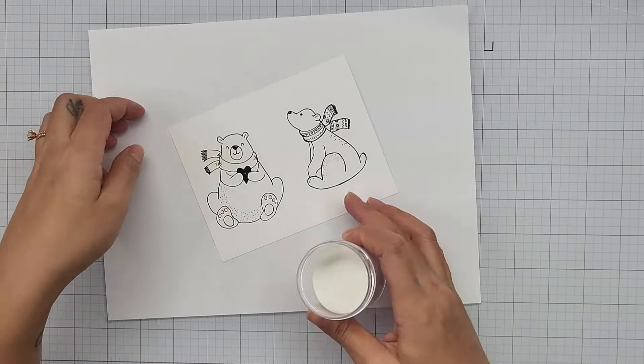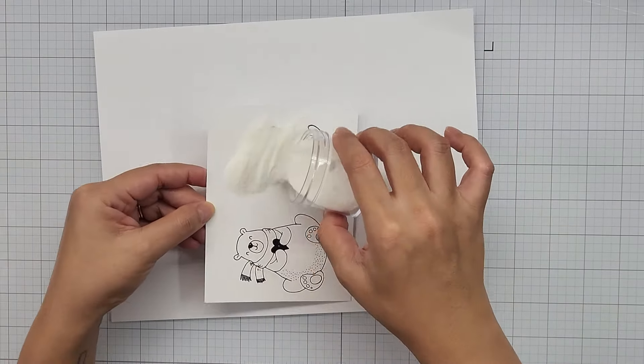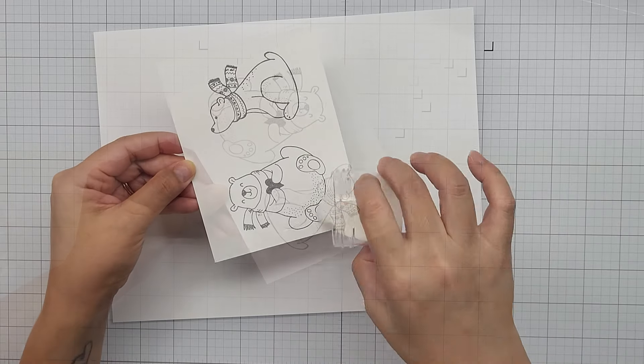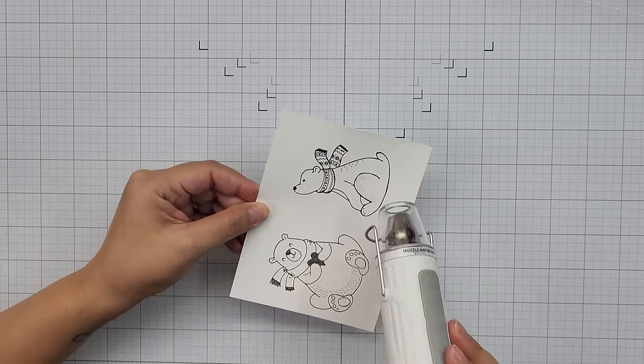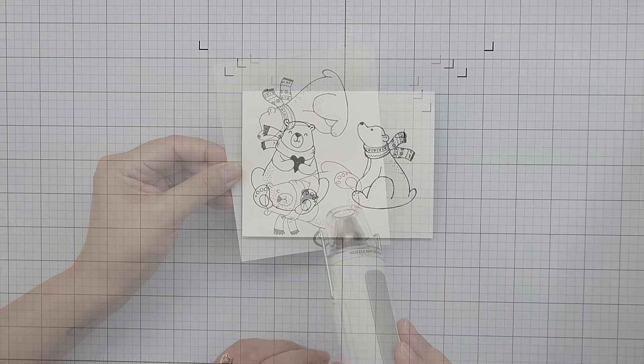Now I poured clear embossing powder over the stamped bears. I heat set the embossing powder with my heat tool until it was nice and melted.